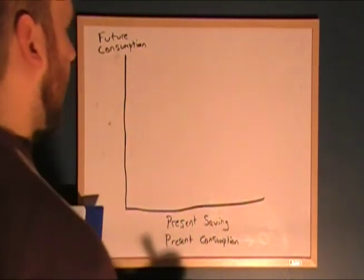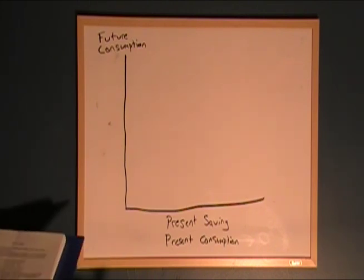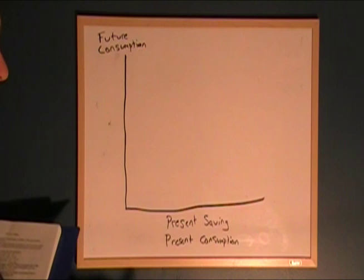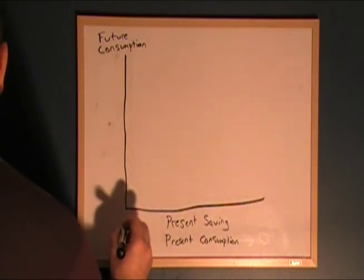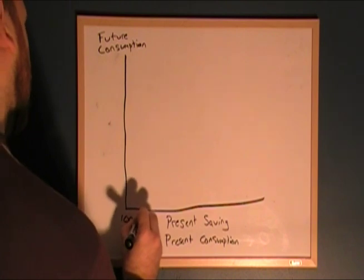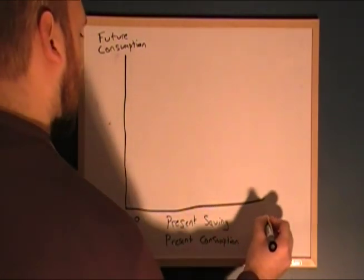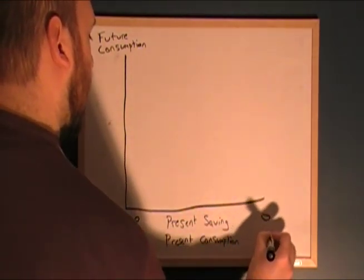If I only have $1,000, which is what we're going to use in this example, I can either save it or consume it — some combination of the two, but only $1,000 worth. So I can save up to $1,000 or I can consume up to $1,000.